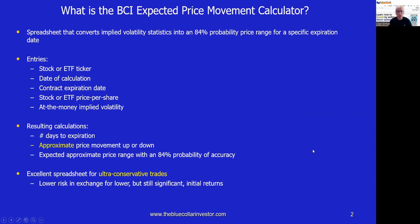Let's first define what is the expected price movement calculator. This is a spreadsheet that will convert implied volatility statistics into 84% probability price ranges for specific expiration dates. Into the spreadsheet, we have five entries — all can be accessed through your typical option chain.